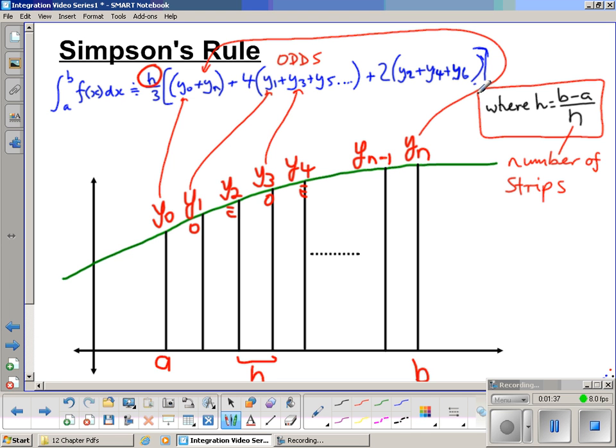We might have a y5 here. It depends on how many y values we have, but that would go into the odds as well. Now into our evens bracket here, we'll go the following items: y2, y4, and any other y values that are even. So that's how we piece together our values into our formula, and we go from there. So I'll show you an example next.